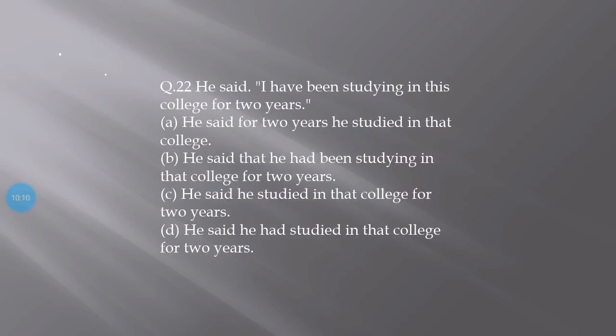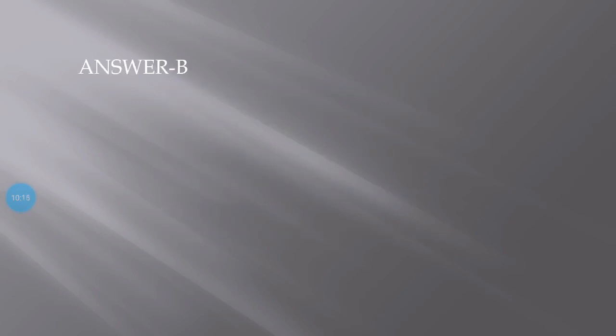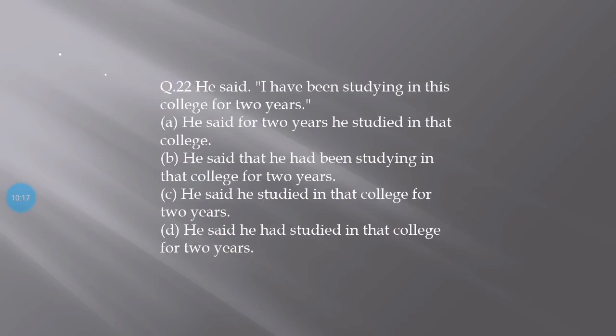Next: Turn around, he told her. The correct answer is D - he asked her to turn around. Next: He said I have been studying in this college for two years. The correct answer is B - he said that he had been studying in that college for two years. When we look at the sentence, in active voice it's in present continuous or present tense, but when we convert to passive, it automatically becomes indirect speech and goes into past tense.